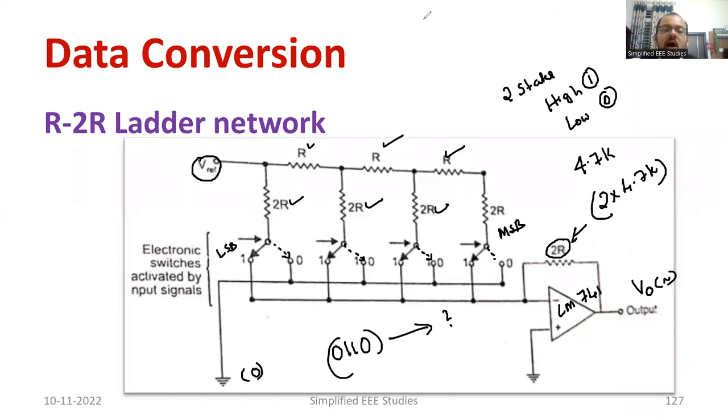So that's all about R2R ladder network. It is more precise compared to the previous weighted resistor DAC. Also, it is easy to identify the value of resistor. These are the major advantages.